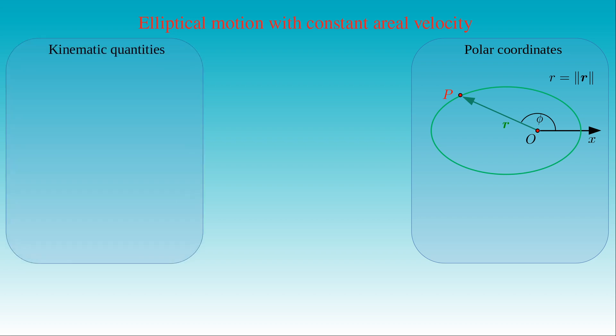In the general case of the elliptic motion, the position of a moving body is given by the radial coordinate R and the azimuthal angle phi, which are some given functions of the time t. The relationship between these two coordinates is described with the polar equation. The velocity of the body is the tangent to its orbit at the point P, and its radial component is equal to the derivative of the radial coordinate R with respect to time.